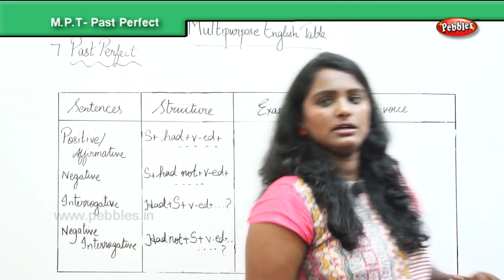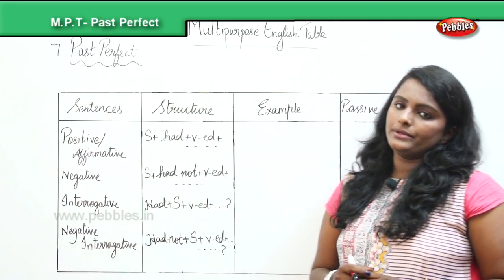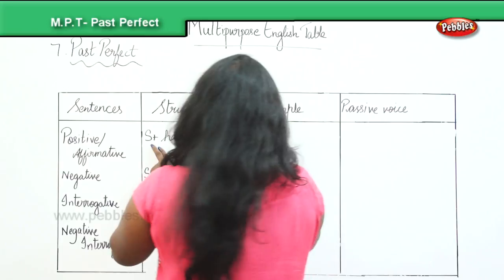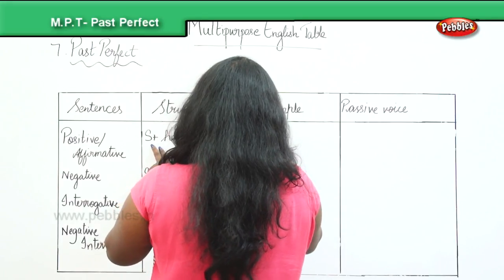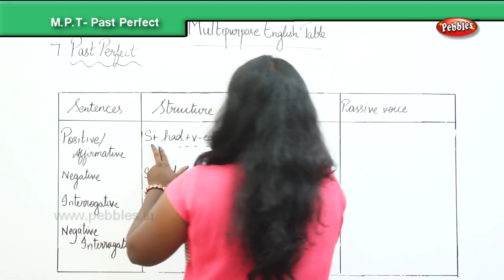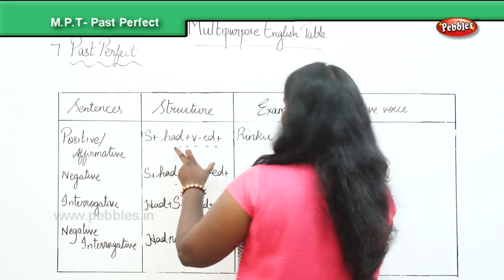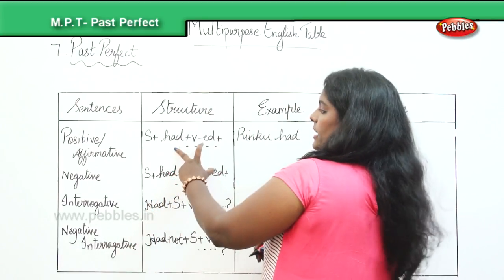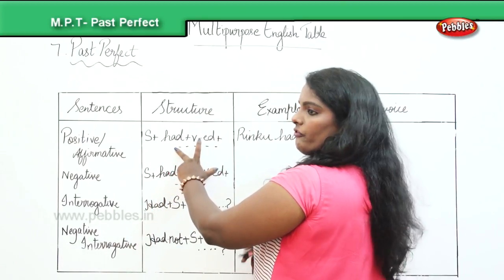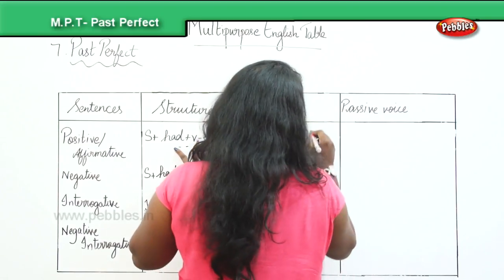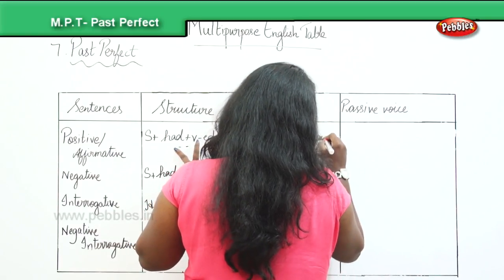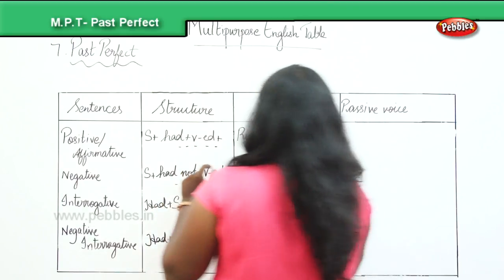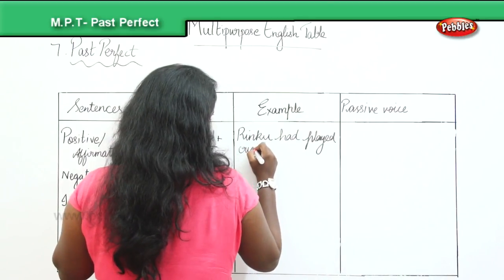Let's switch over to the examples. I am doing the first one for you. Rinku — that's what my structure says — had, and the ed form of the verb 'play' is 'played'. So: Rinku had played cricket.